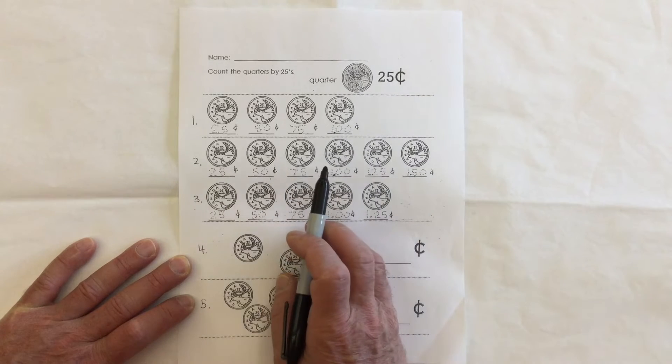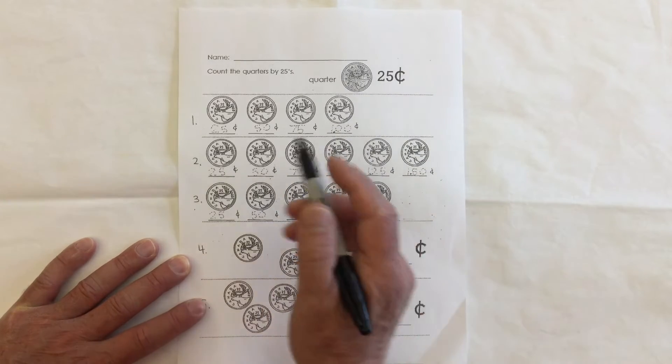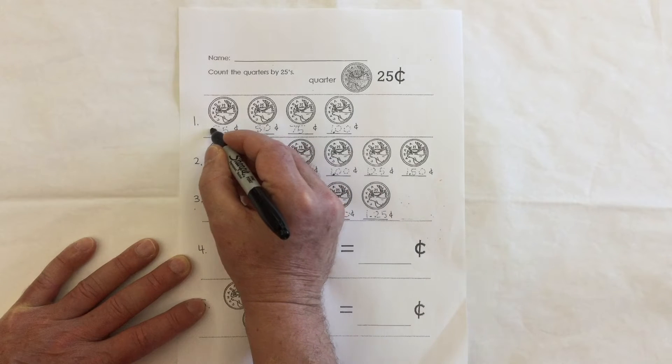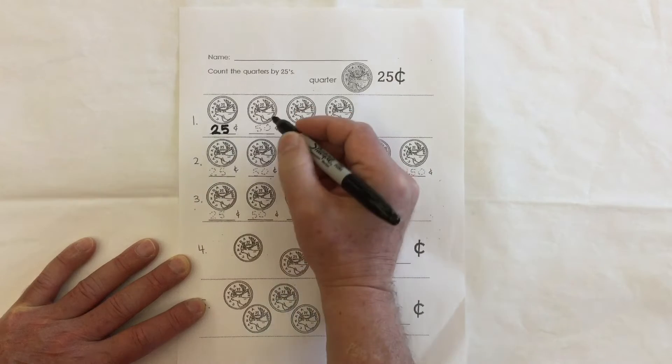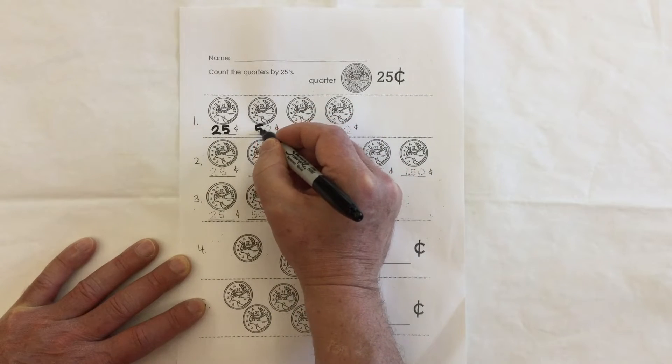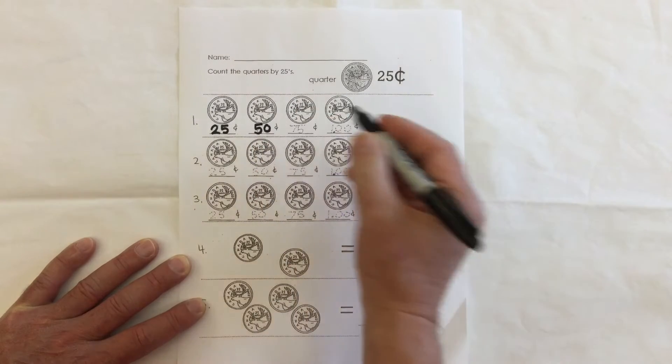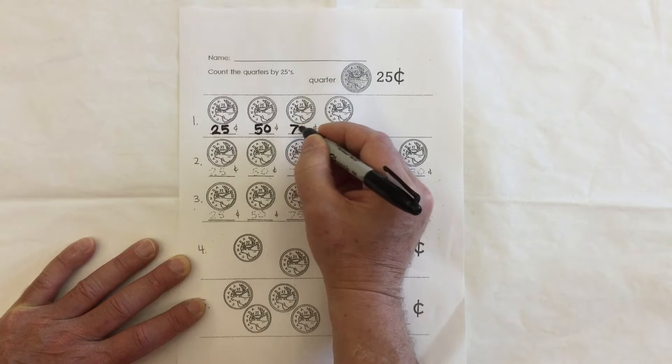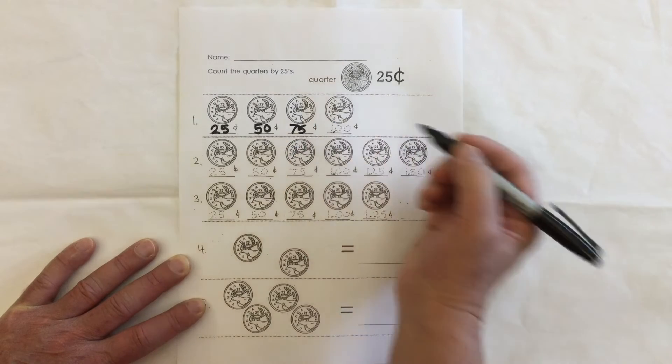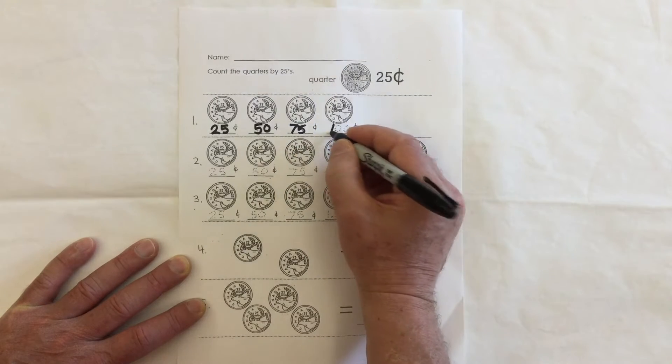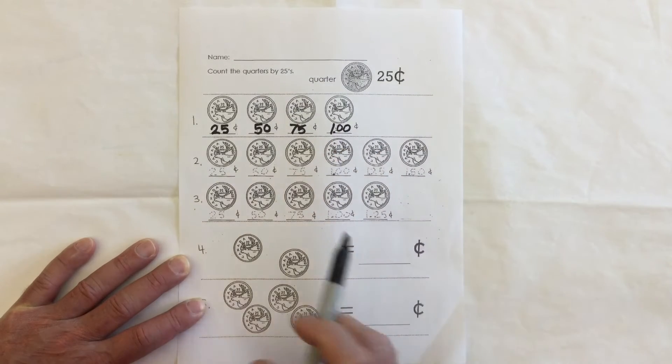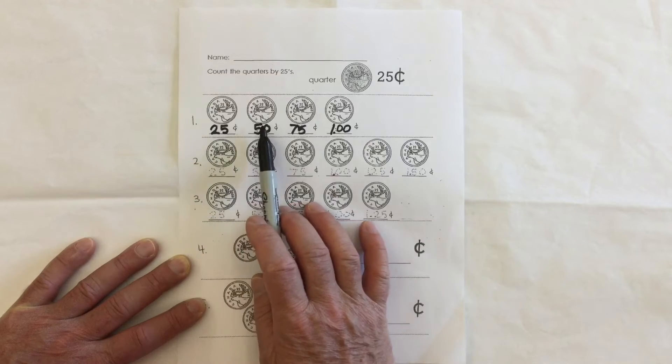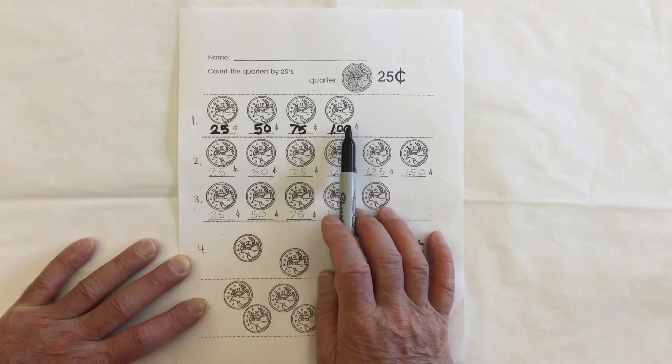Here's what it looks like. So first quarter is 25 cents. When you have two quarters that's 50 cents. When you have three quarters it's 75 cents, and when you have four quarters that's one dollar or 100 cents. So as long as you can remember these four numbers, you can count by quarters.